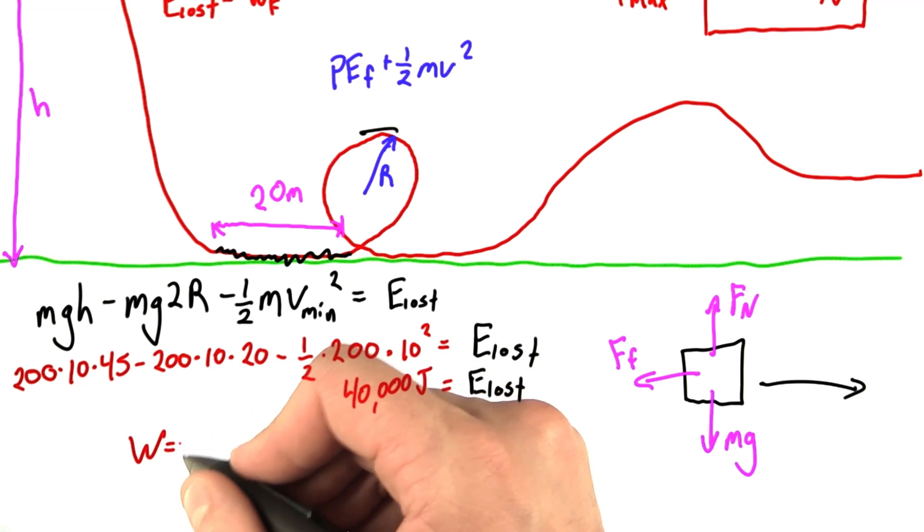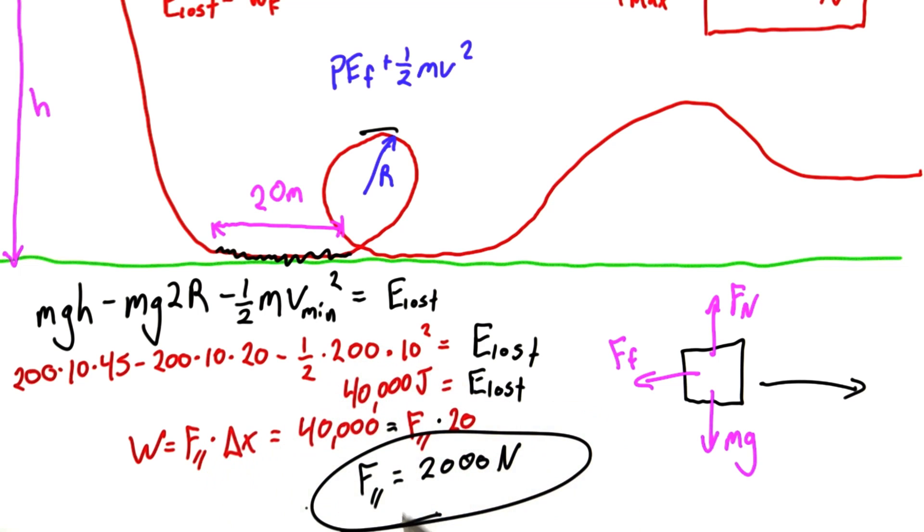So we can use our equation, work equals F parallel times distance. And I get an answer of 2,000 newtons. Now, you may have also called this negative. I was being a little sloppy here with what I should call negative and positive. So we accepted either positive or negative 2,000 newtons for the answer.